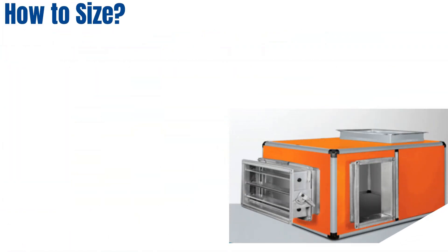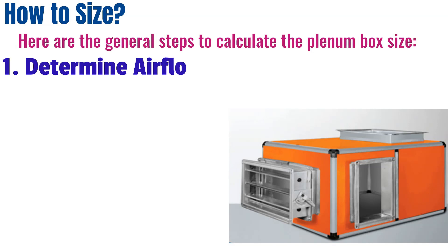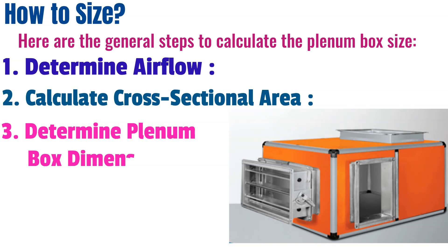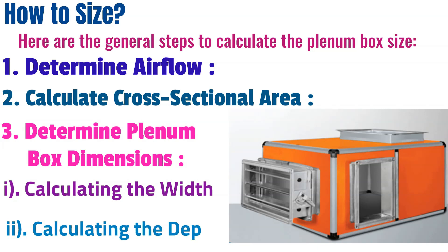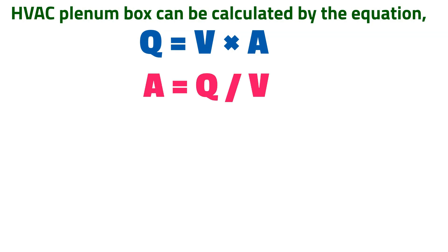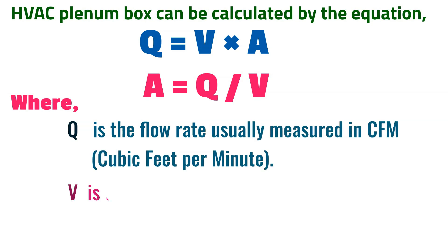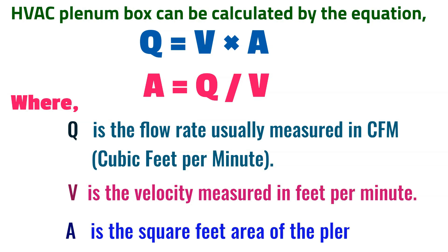Here are the general steps to calculate the plenum box size: Step 1 — determine the airflow; Step 2 — calculate the cross-sectional area; Step 3 — determine the plenum box dimensions, including calculating the width and calculating the depth. The HVAC plenum box can be calculated using the equation: Q = V × A, or rearranged as A = Q ÷ V, where Q is the flow rate in CFM (cubic feet per minute), V is the velocity in FPM (feet per minute), and A is the area of the plenum box in square feet.